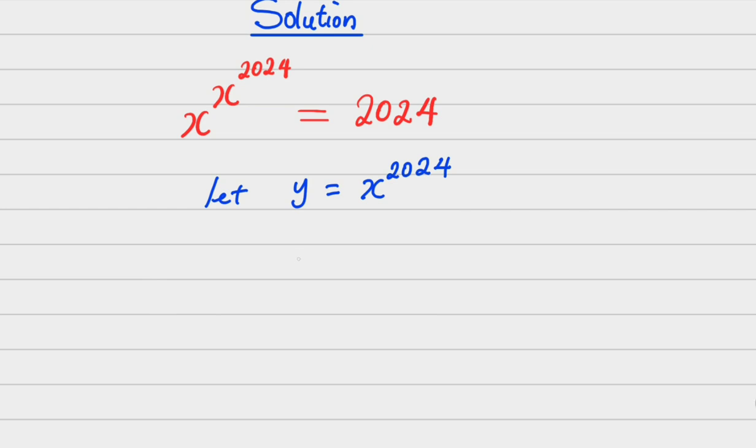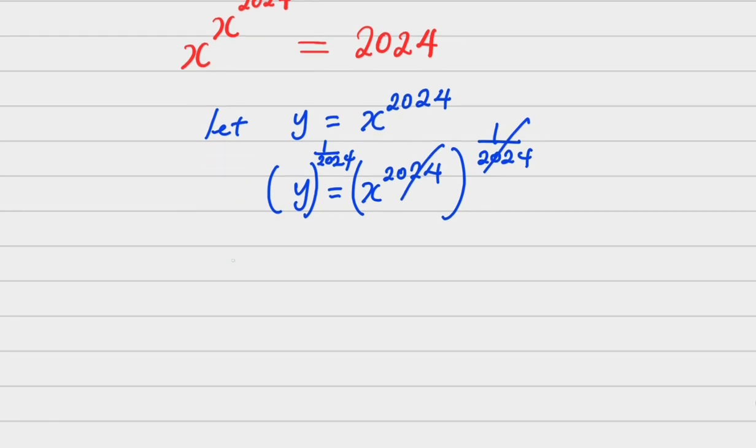If I want to find the value of x, I raise both sides to the power of the inverse, which is 1/2024. You can see that the exponents cancel out.